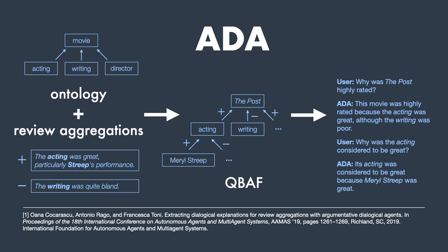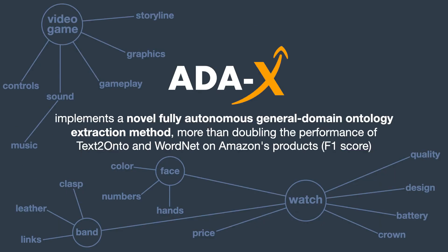However, the movie ontology was manually annotated for Ada, which makes it unsuitable for the more general domain of Amazon, where manually annotating ontologies for thousands of different products would be intractable. The main innovation of AdaX is a novel, fully autonomous general domain ontology extraction method, which can automatically obtain an ontology for any product from the review text. This novel method more than doubles the performance of Text2onto, another popular ontology extraction method, on ontologies extracted for Amazon's products.